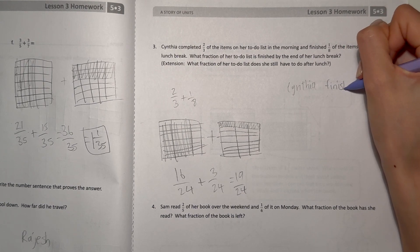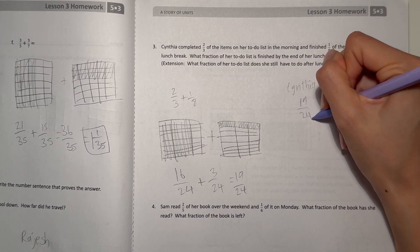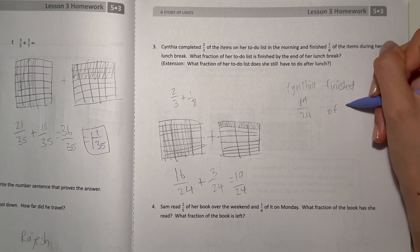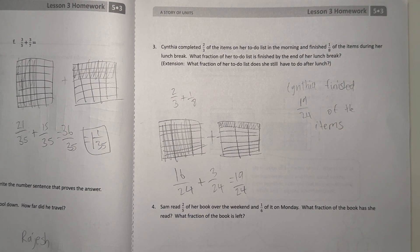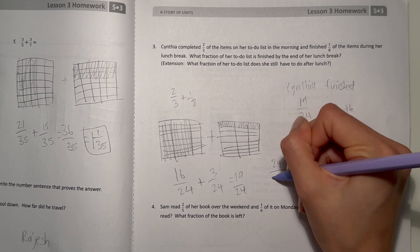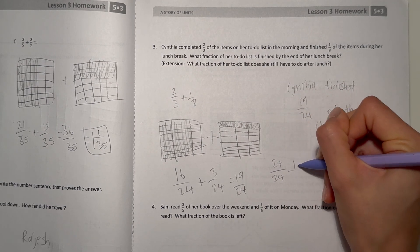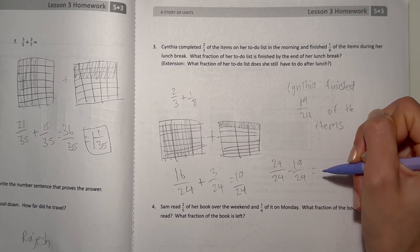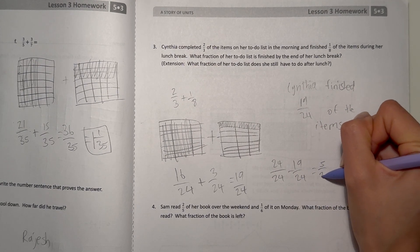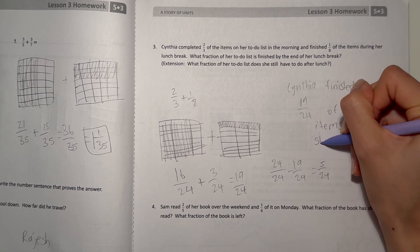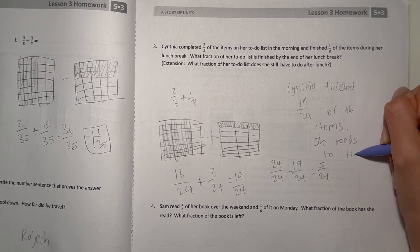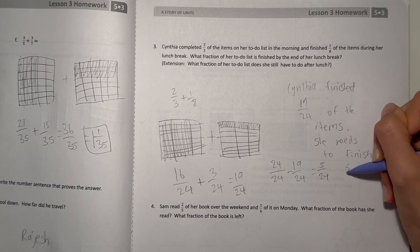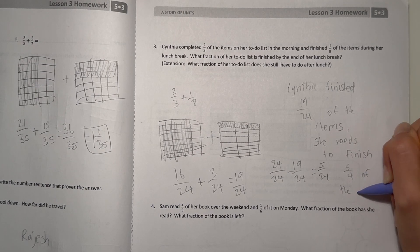Now split this part into eighths and this part into thirds. Two-thirds times eight, we have sixteen over twenty-four plus one-eighth times three is three over twenty-four, which gives us nineteen over twenty-four that she completed. That means then the lunch break Cynthia finished nineteen over twenty-four of the items. But how much, how many, what fraction does she still need to do? Well, a whole, the complete version is twenty-four over twenty-four, so we subtract nineteen over twenty-four. That gives us five over twenty-four. That means she needs to finish five-twenty-fourths of the items.